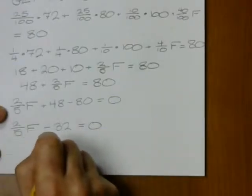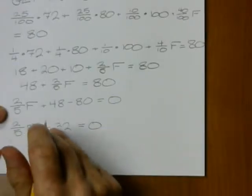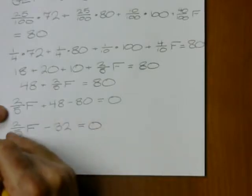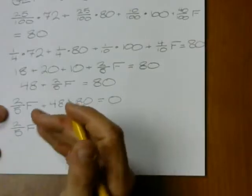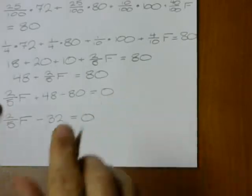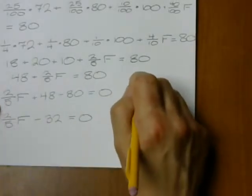and this is ax plus b. Of course, my b is negative 32, my a is 2 fifths, and F is my variable instead of x. I can just take negative b over a,